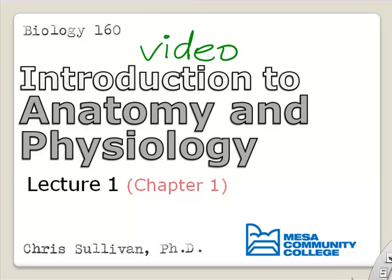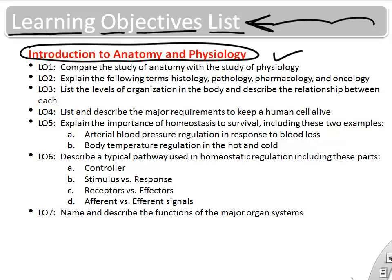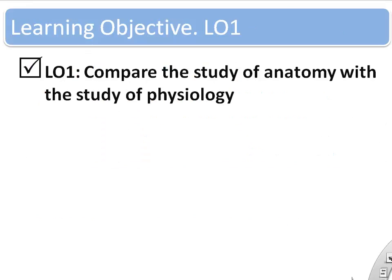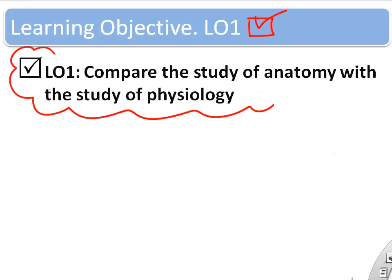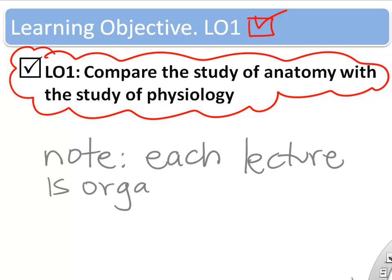This video is going to cover an introduction to anatomy and physiology, lecture one. The learning objectives we're going to cover include introducing anatomy and physiology, with a focus on homeostasis and the pathways that regulate homeostasis in the body. Our first learning objective is to compare the study of anatomy to physiology, which is important since we're in an anatomy and physiology class.